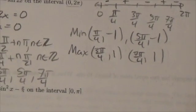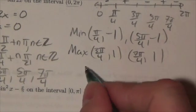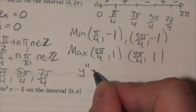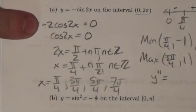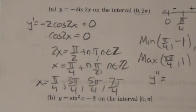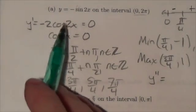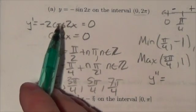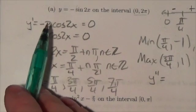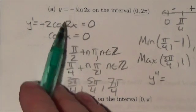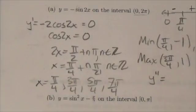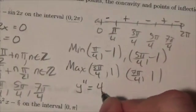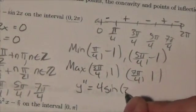Now the next thing I want to do is find the intervals of concavity, which means I have to take the second derivative. Looking back at the first derivative, which was negative 2 cosine of 2x: the derivative of cosine gives negative sine, the negatives cancel, giving a positive result, and I multiply by another factor of 2 from the chain rule. So y double prime becomes positive 4 sine of 2x.